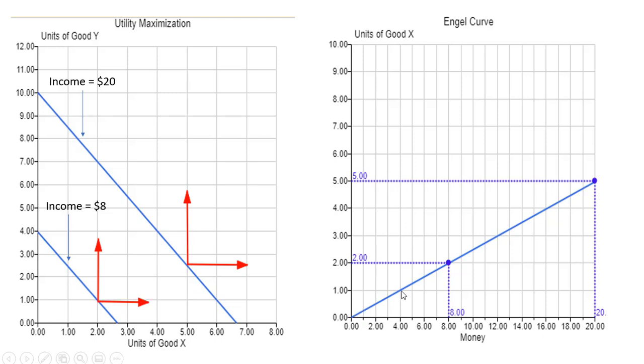So looking at our Engel curve then, at an income of $20, plug that into the Engel curve, come across, and the utility maximizing choice here for good x is 5 units. All right, I will stop here.